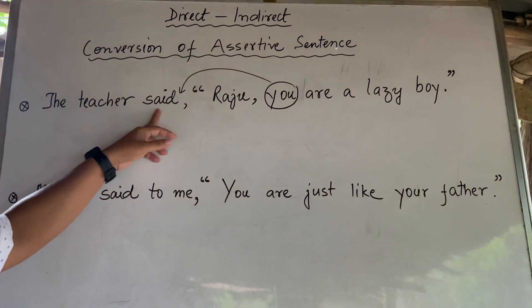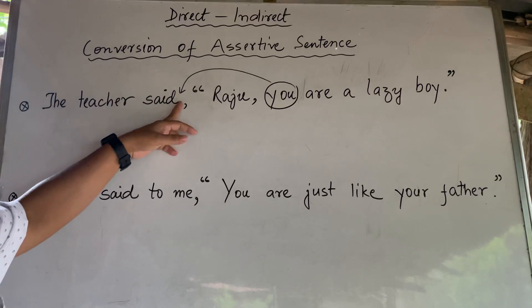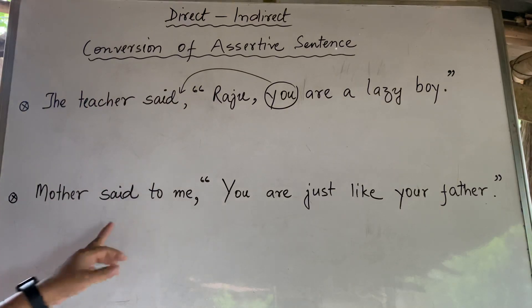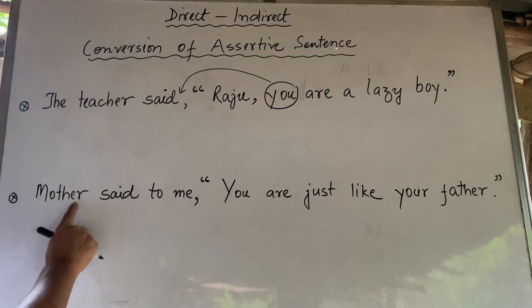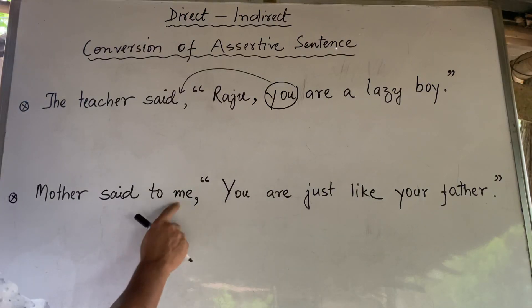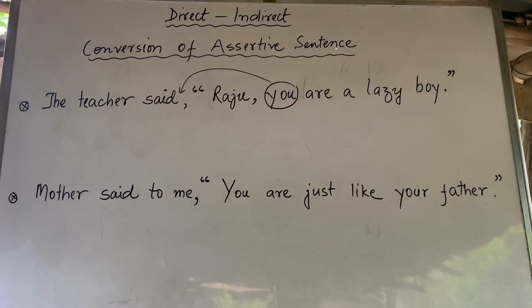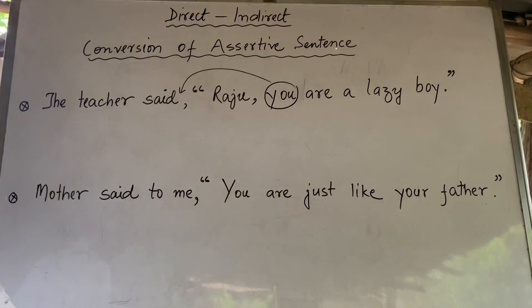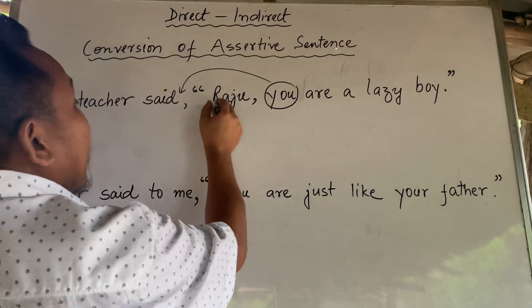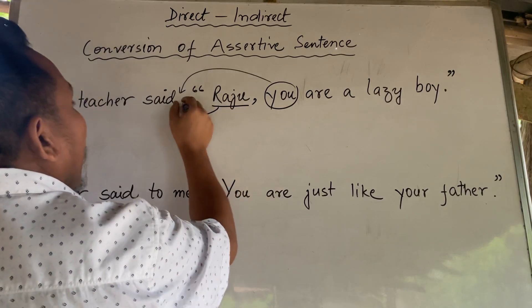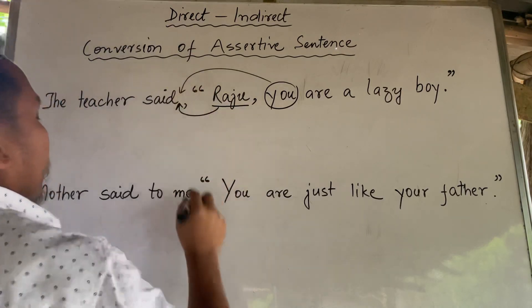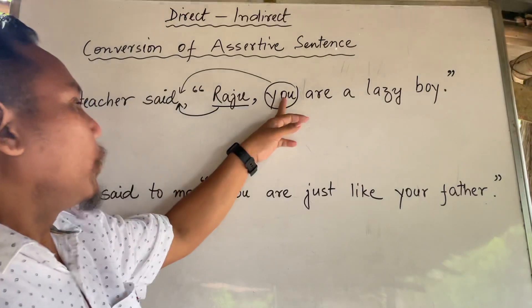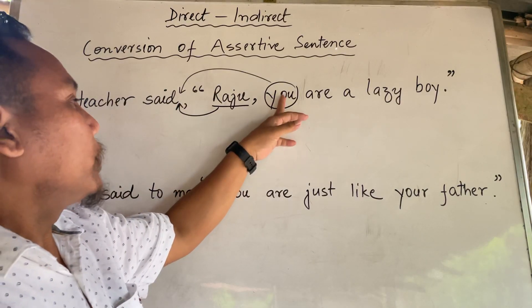The teacher said to me — the subject, verb, object and object. When the teacher said to me the subject, we will get to know the subject.